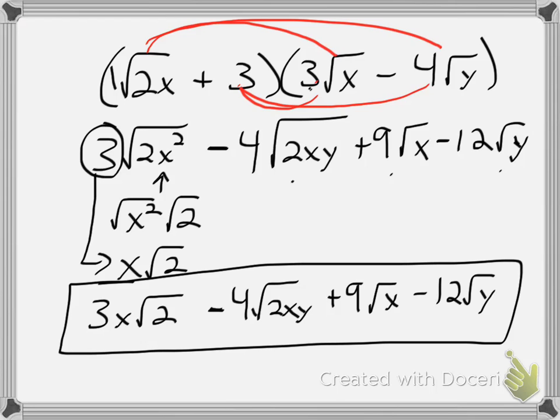So again, we want to FOIL, multiply what's outside to outside, inside to inside, and then simplify and combine like terms as much as we can.